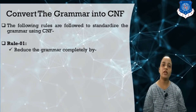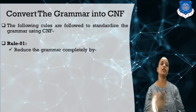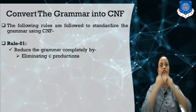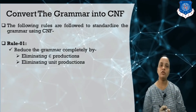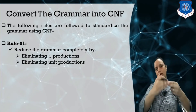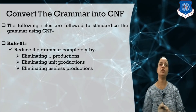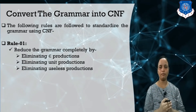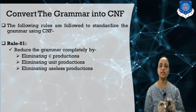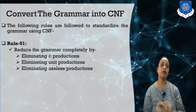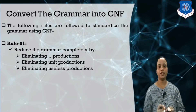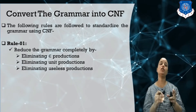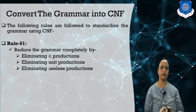What is the CFG simplification step that we have already studied in a previous video? The first step is to remove the null production. After removing null productions, we try to remove the unit production. After removing the unit production, we try to remove the useless symbols. In sequence, we perform these steps — this is called CFG simplification. In an exam, if they ask to perform CFG simplification, we need to perform these three steps always.